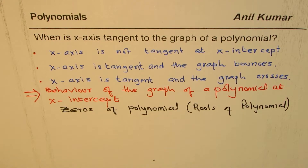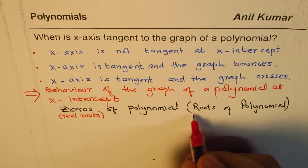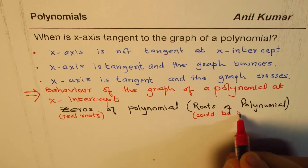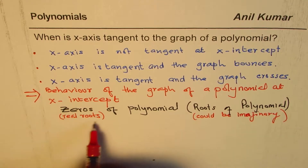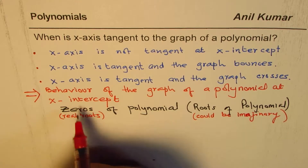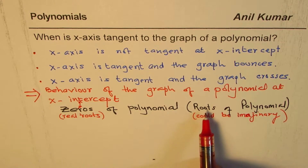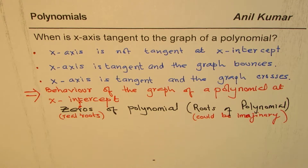There is one difference however: when we talk about zeros, we are talking about real roots. Roots could be imaginary. So we are talking about real roots, which we refer to as zeros — these are what you see on the graph as x-intercepts. Not all roots are represented as x-intercepts since we have imaginary roots. Sometimes these terms overlap, so I'm being a bit loose with the terms here.